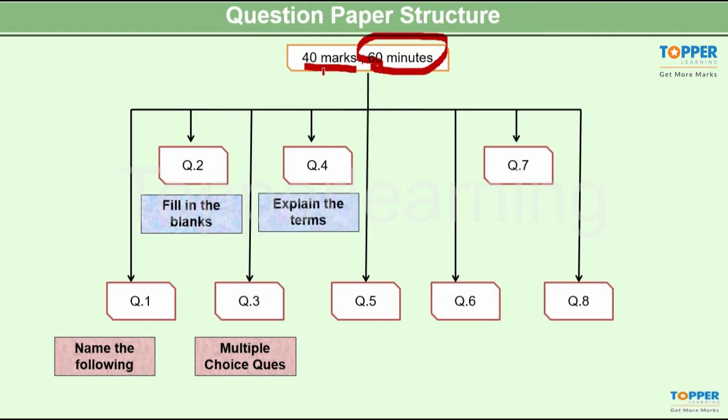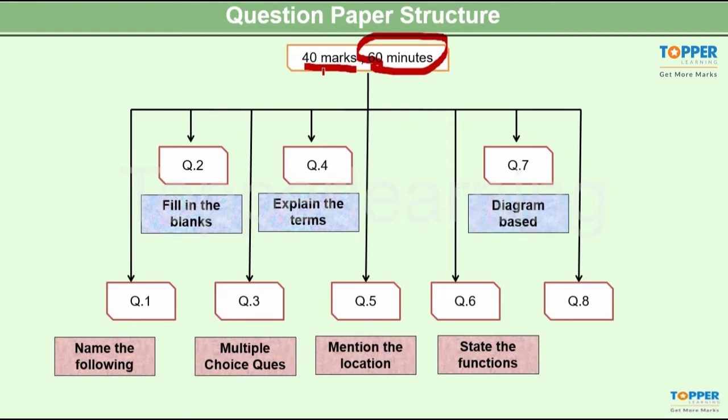Question 4 explain the terms. Question 5 mention the location. Question 6 state the functions. Question 7 and question 8 were both diagram based questions based on experiments of the study. Transpiration and photosynthesis.